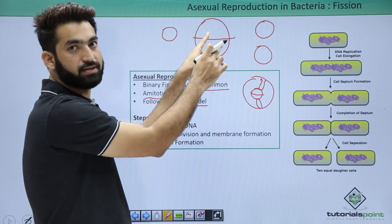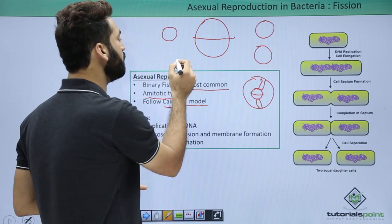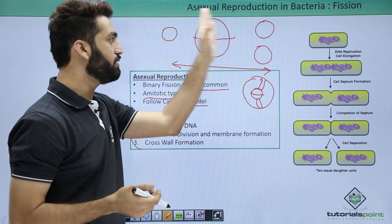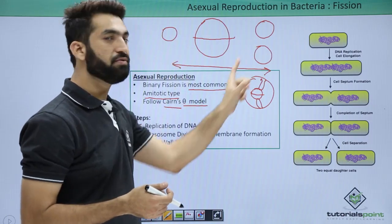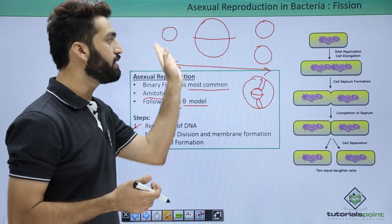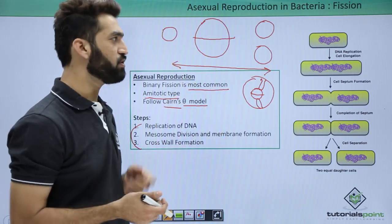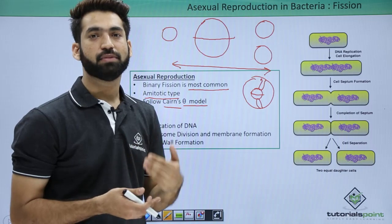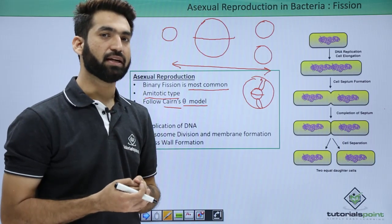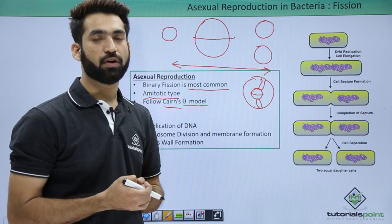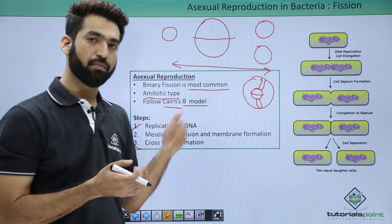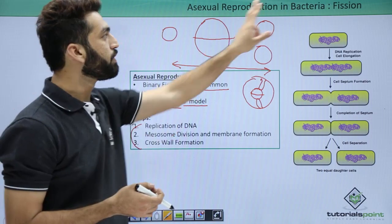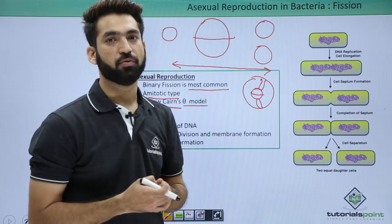The time from when the bacteria starts growing to when it divides into two is called generation time, also known as duplication time or doubling time. For most bacteria, the duplication time is 20 to 40 minutes, though it varies by species. The next topic is the second asexual reproduction method: endospore formation.